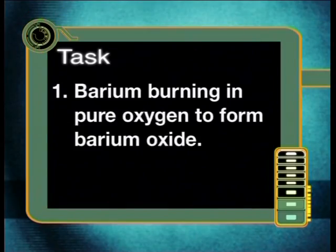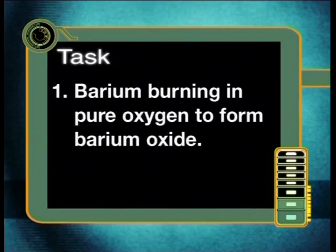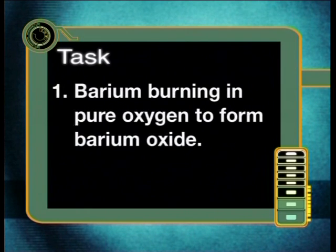Today's task will give you another chance to check your progress in writing equations of your own. Write balanced chemical equations for each of the following reactions: barium burning in pure oxygen to form barium oxide; magnesium burning with sulphur to form magnesium sulphide. I hope that you'll join me for our next lesson when we will continue our experiments on the alkaline earth metal oxides.